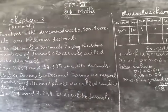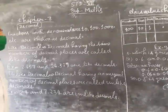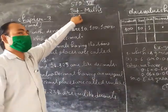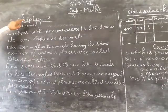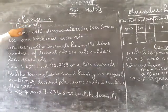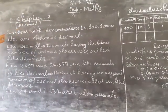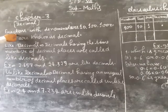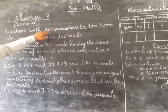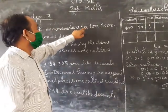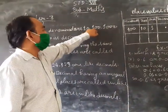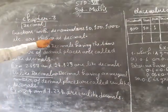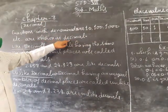Good morning ladies, and welcome to online courses. In this video for standard series of decimals, today I am reading chapter number 3: Decimal. Definition of decimal — fractions with denominators 10, 100, 1000, etc., are called decimals.